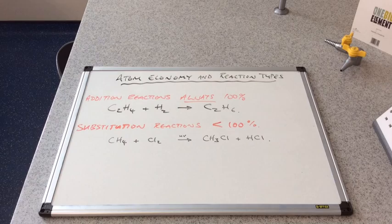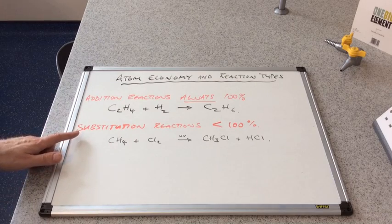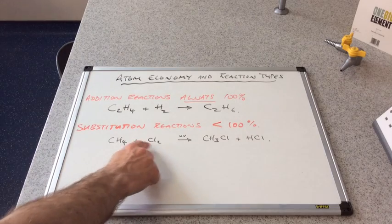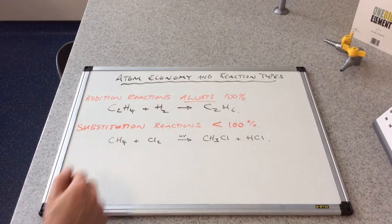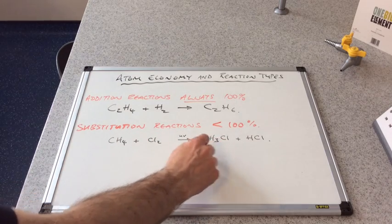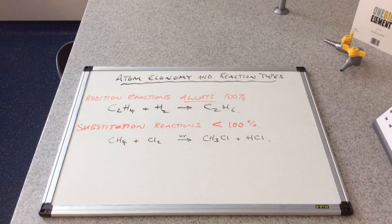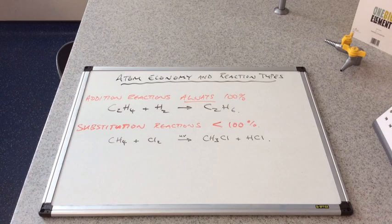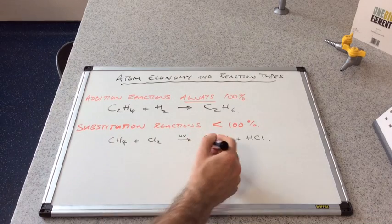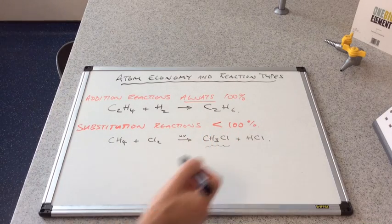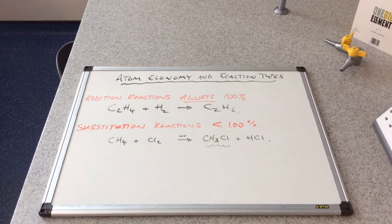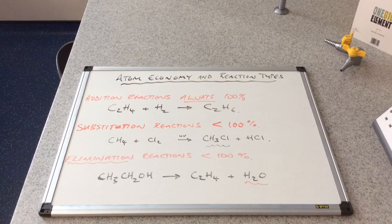And of course that's always going to be 100% atom economy. The second type of reaction we'll look at are substitution reactions. So they would always have an atom economy less than 100%. I've chosen the chlorination of methane in the presence of UV to make chloromethane and HCl. So you can see that because we have more than one product, let's suppose that this was the substance that we wanted to make, then obviously the HCl is a waste product.